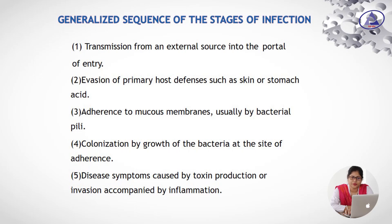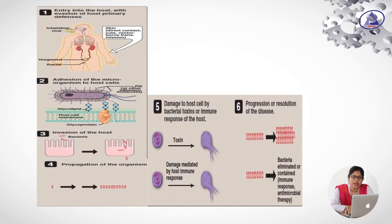The generalised sequence of stages of infection begins with transmission from an external source into the portal of entry, followed by evasion of primary host defences such as skin or stomach, then adherence to the mucous membrane — usually by bacterial pili — and colonisation of bacteria at the site of adherence, ultimately producing disease symptoms by production of toxin. Primary defences include skin; direct contact, cuts, and vector-borne transmission can also occur.